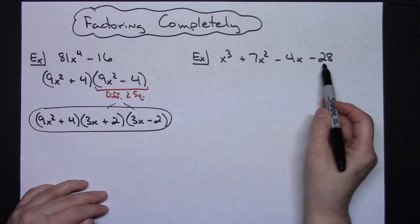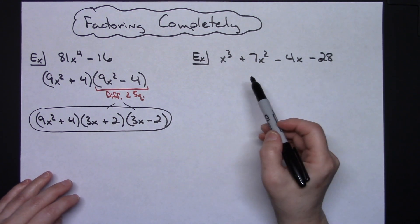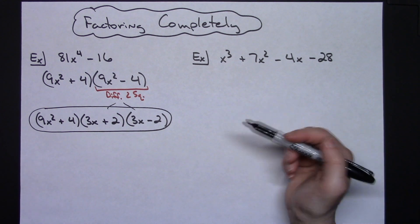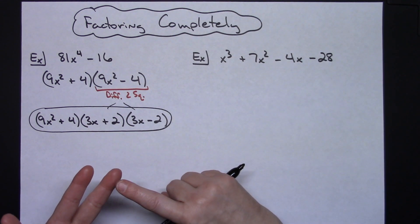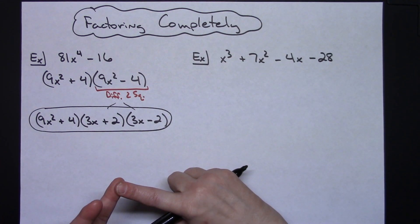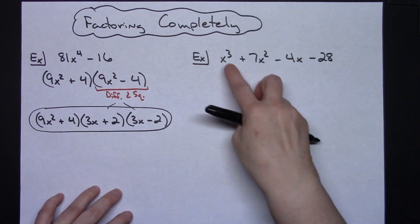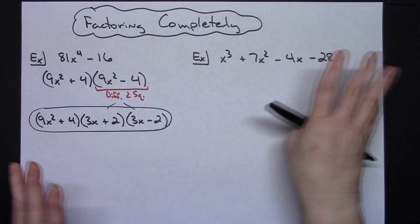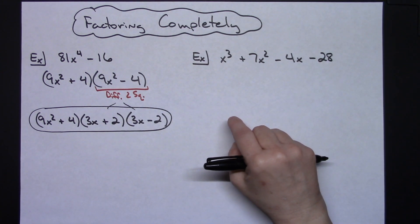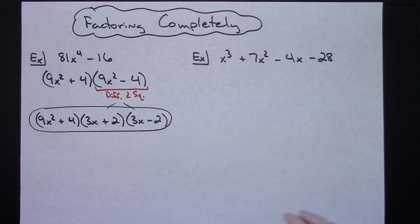For the second example I've got four terms. I do not have a greatest common factor, so I'm going to go through my factoring techniques for four terms. The first you should always try is factor by grouping. If that doesn't work, you could try the rational root theorem, or try regrouping — sometimes you can force a difference of two squares by grouping three terms together. This one, though, I think will work nicely with factor by grouping.